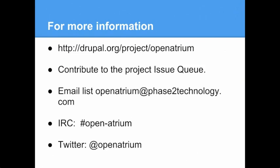To learn more: the project page on Drupal.org is a great starting point. We're currently in Beta 3, with Beta 4 likely out today, and a public release targeted for later this fall. Contribute to the issue queue, help fix bugs, or get involved in development. You can also reach us at openatrium@phase2technology.com, IRC at #openatrium, or Twitter at @OpenAtrium.